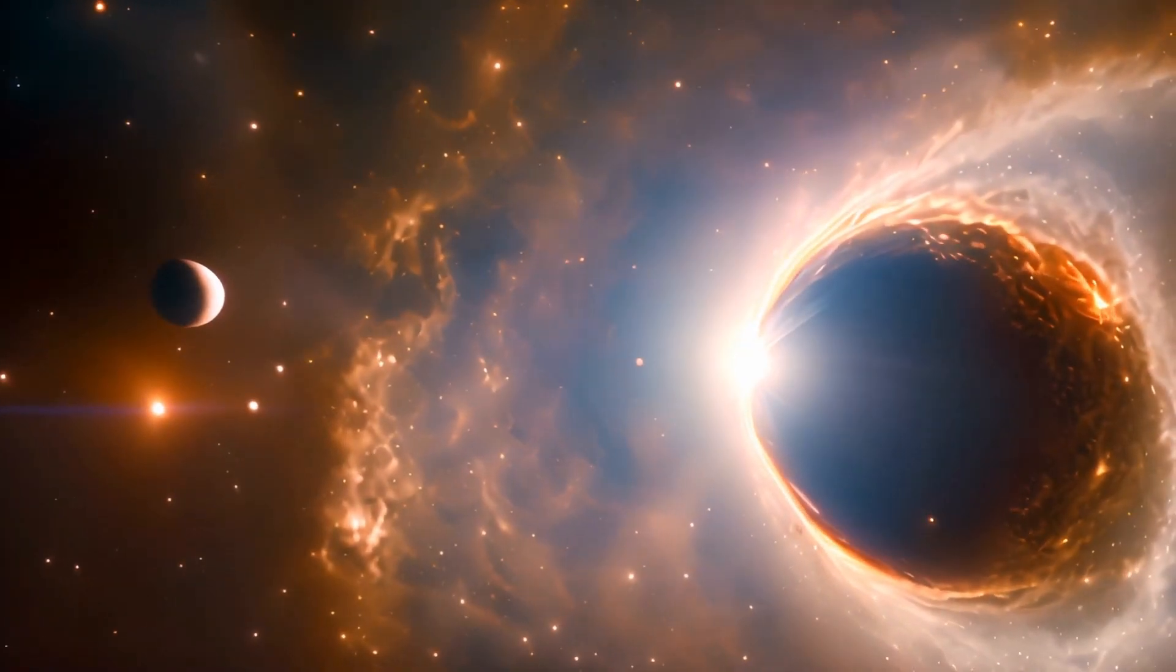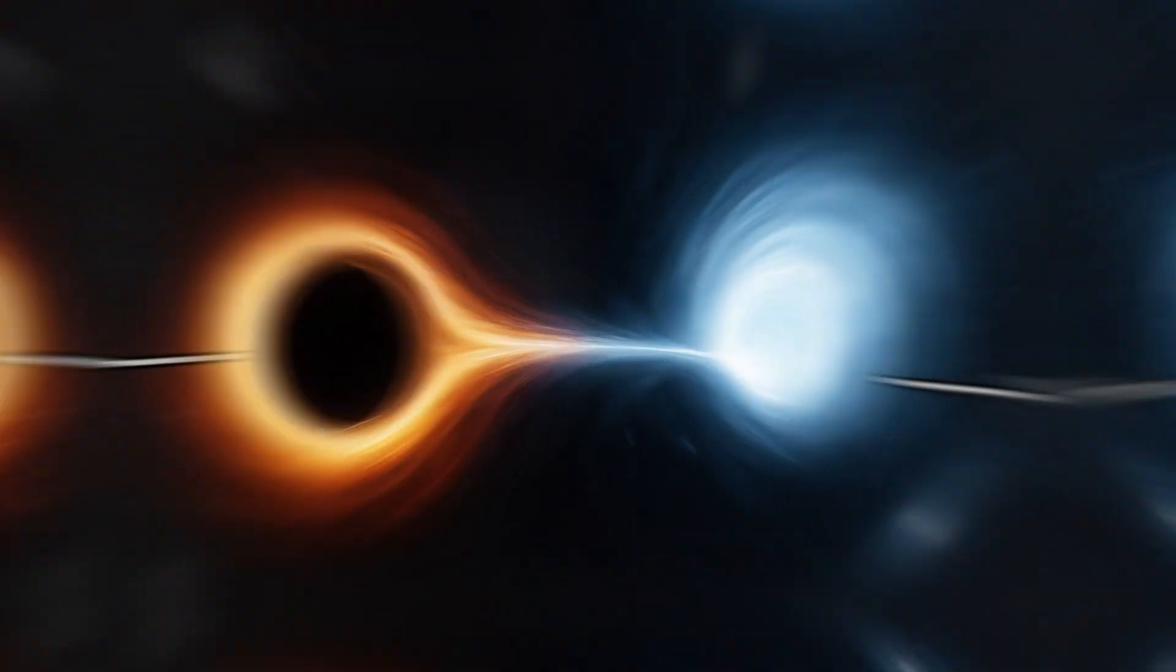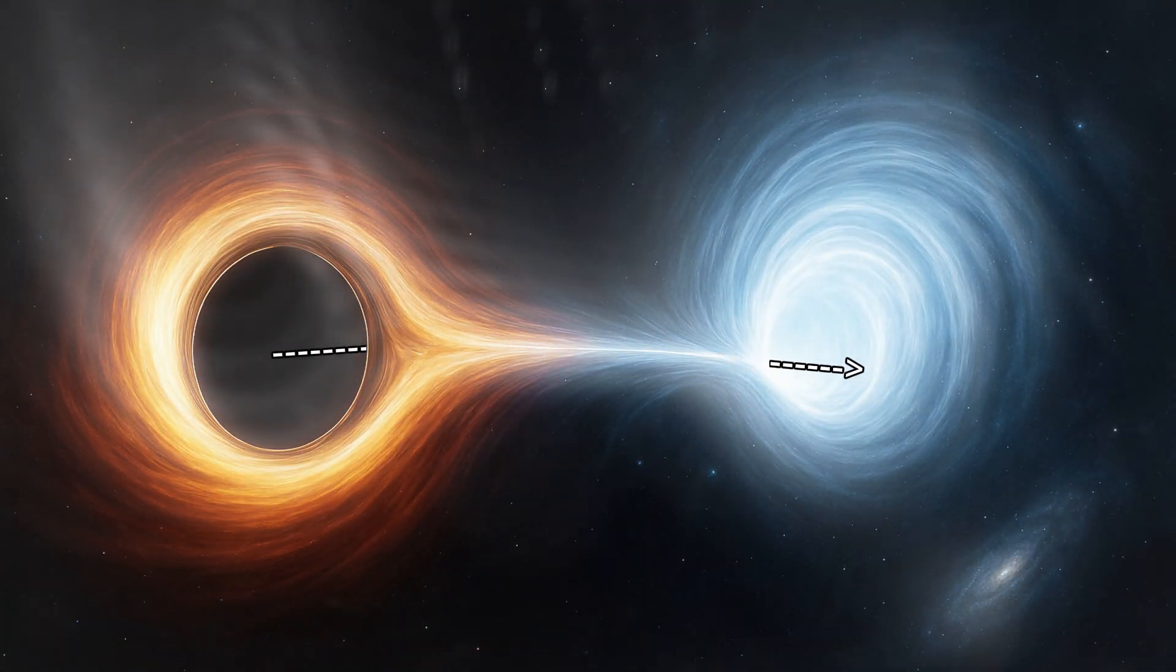From the outside, it would look exactly like a black hole. Light would still bend around it. But deep inside, spacetime could curve back outward, forming an exit somewhere else.